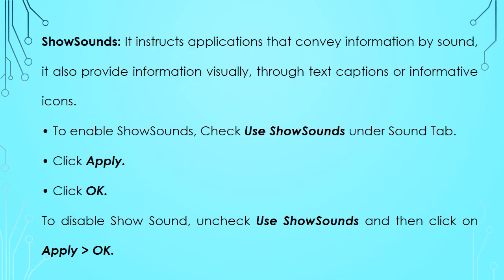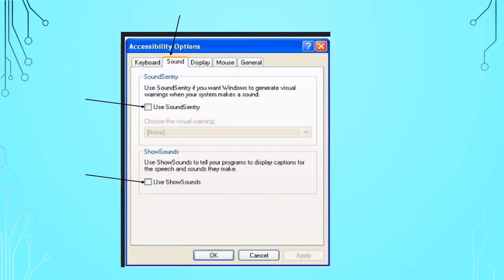Show Sounds instructs applications that convey information by sound to also provide information visually, through text captions or informative icons. To enable Show Sounds, click the 'Use Show Sounds' checkbox under the Sound tab, then click Apply and OK. Look at the figure to understand from where you have to set the Accessibility Options.